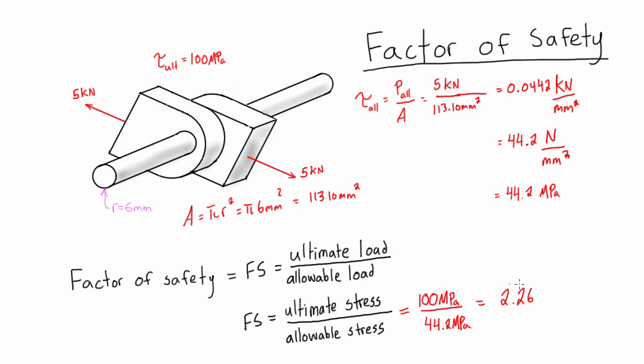And also you can take this and you can work it backwards into the equation for the ultimate load. Because we know the allowable load is five kilonewtons. We have the factor of safety now, which is 2.26. And if you just rearrange that equation, you'd find out that the ultimate load would just be 2.26 times five, which would be 11.3 kilonewtons. So you can kind of work between these two equations.